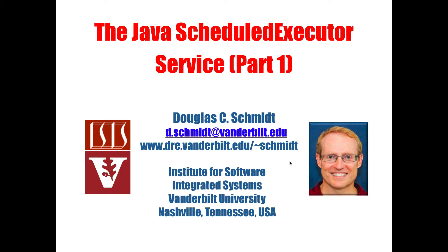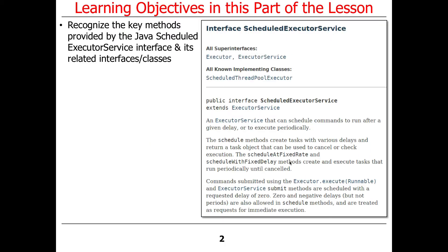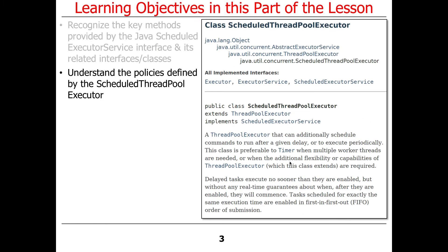The next topic continues our analysis of various executor framework implementations and interfaces. This is going to cover the scheduled executor service. A couple weeks ago we talked about the executor interface and the executor service interface, and I showed you how to use a future task in the context of the executor service. Now we're going to talk about the scheduled executor service, its methods, the interfaces and classes it involves, and the policies defined by its implementation called the scheduled thread pool executor.